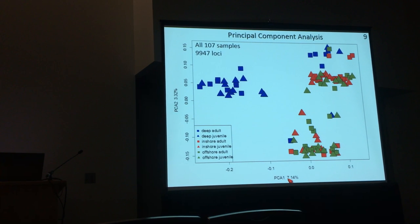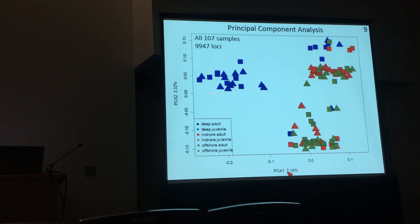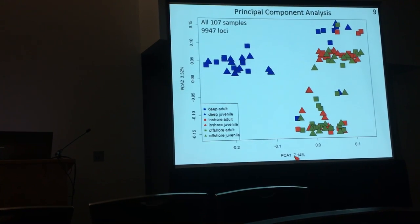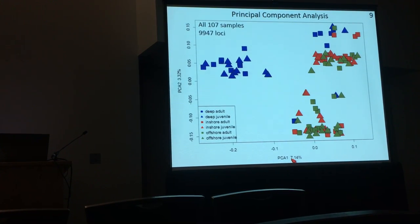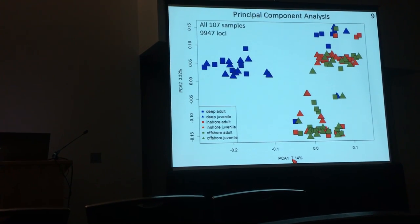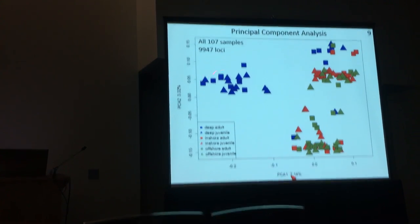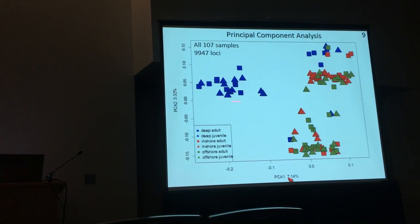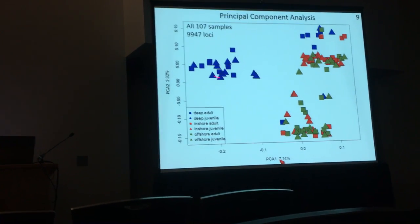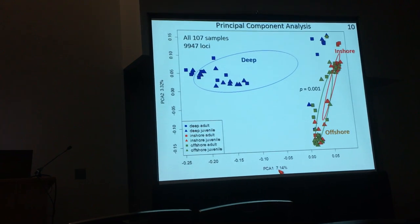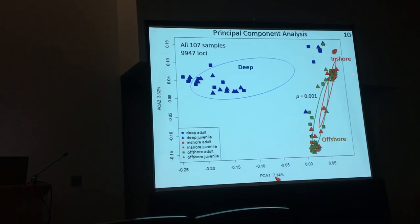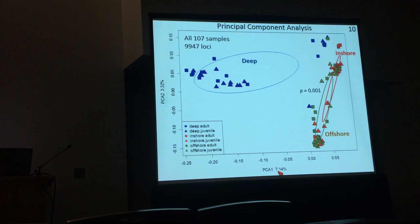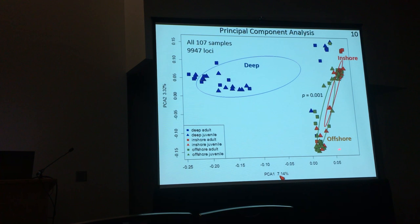Based on 107 samples across all three habitat types and nearly 10,000 loci from the RAD pipeline, the first principal component largely separates a deep cluster from the other two, accounting for about 7% of variation. We see approximately three clusters, though the inshore and offshore clusters are less defined than the deep cluster. When we test whether clustering differs by habitat type, we find a significant difference. I refer to these as the inshore-preferring genotype, the deep-preferring genotype, and the offshore-preferring genotype, though these are not absolute.